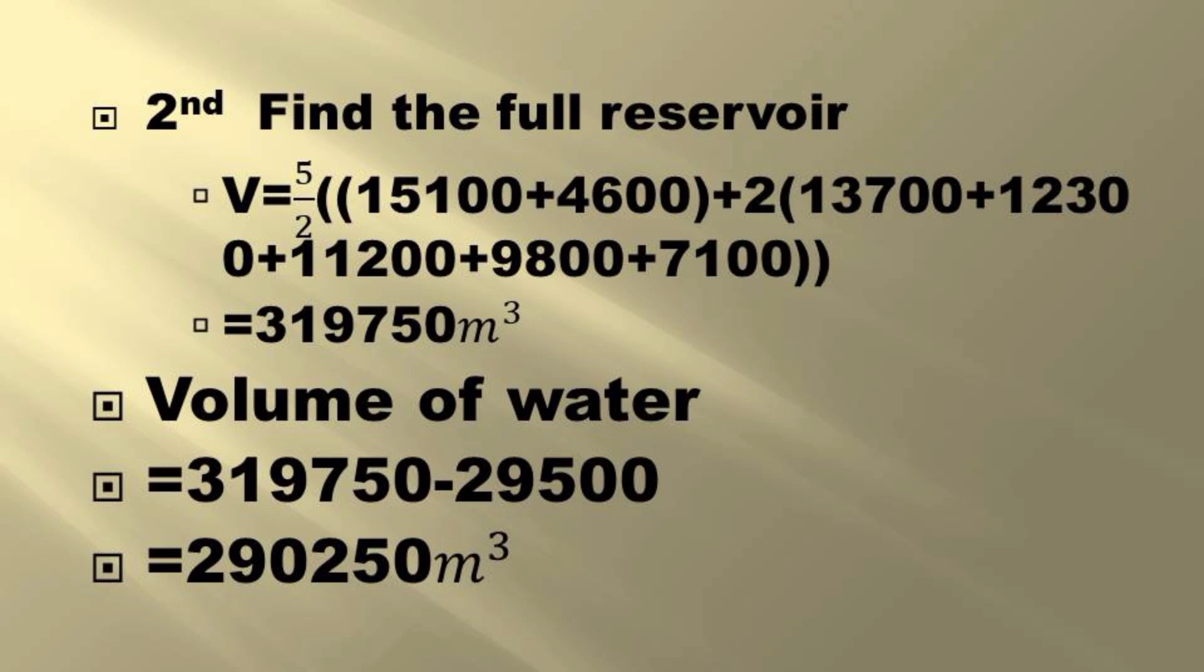In our second calculation, we find the full reservoir. V will equal 5, the difference in the contours, 5 meters, over 2 into brackets our first area plus our last area, close the brackets, plus 2 into brackets all our remaining areas. Having done that, we'll get our total as 319,750 meter cubed.